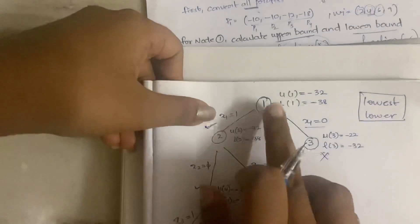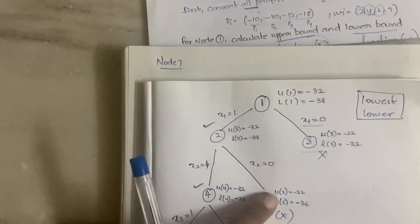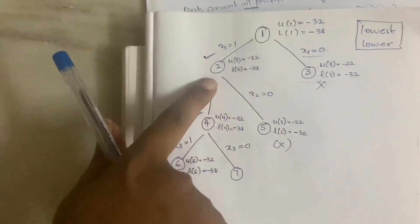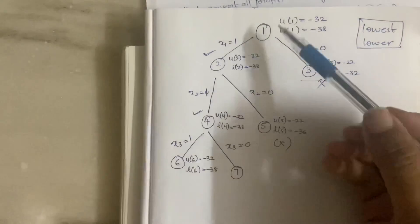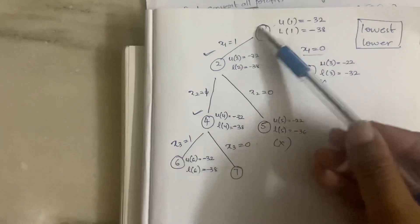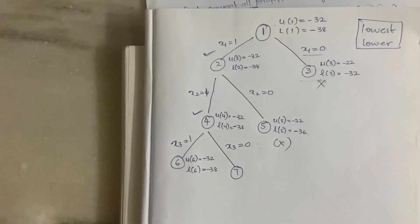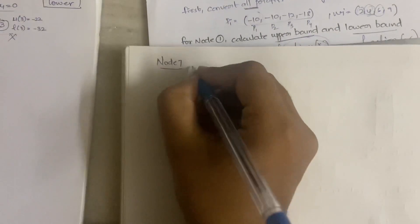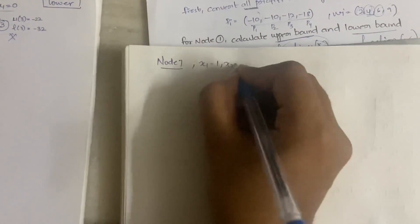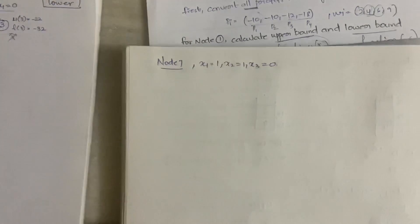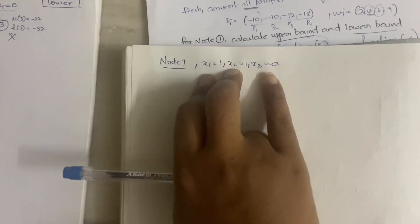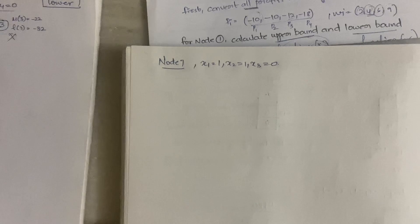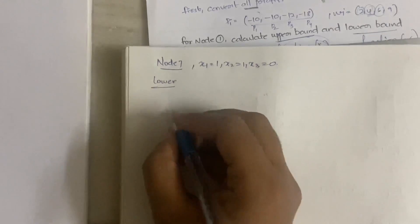Now let's calculate for node 7. The path for node 7 is x1 = 1, x2 = 1, and x3 = 0. You come to node 7 from 1 to 2, 2 to 4, and 4 to 7. So x1 = 1, x2 = 1, and x3 = 0, meaning you are taking x1 and x2 but eliminating x3. If there is more place, you can accommodate x4.